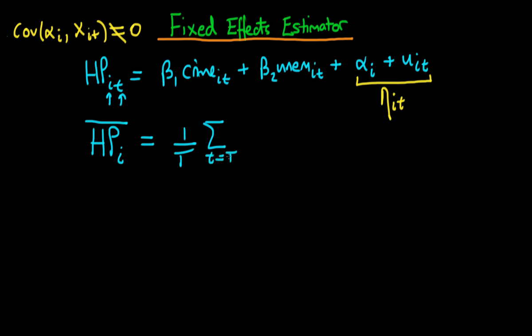Explicitly what we're doing is we're saying well let's take the sum of all of the values of the house price in that particular city from time period t equals 1 to time period t and then let's divide through by the total number of time periods capital T. So this is the time averaged or the time mean value of house prices in that given city.